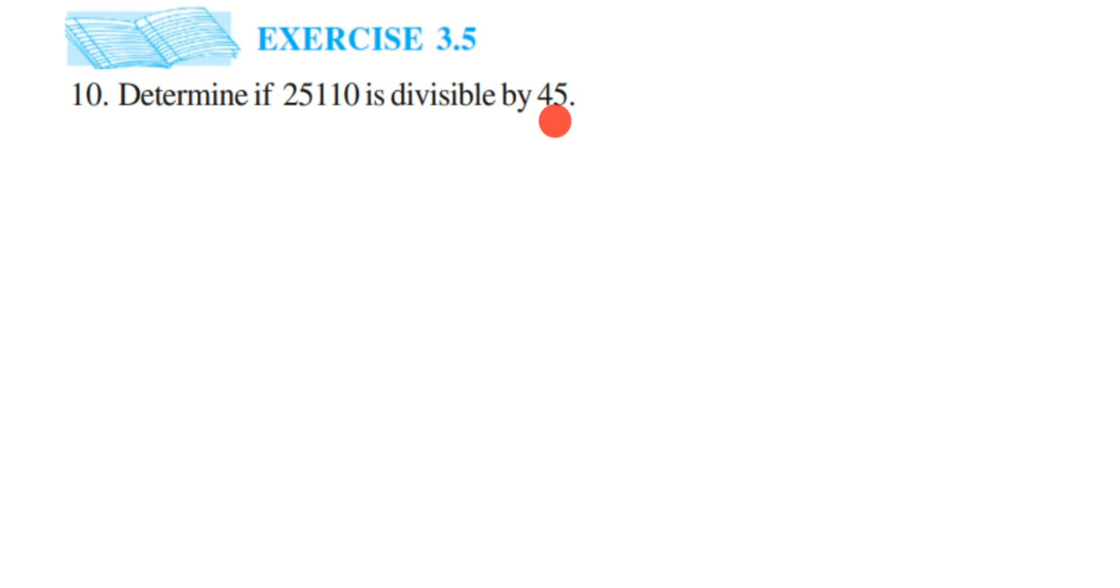That is not what they're asking us. We have to use divisibility rules to check if we can divide it. Now here we know that 45 can be written as 5 times 9. Now let us check if 5 can divide this number and 9 can divide this number.